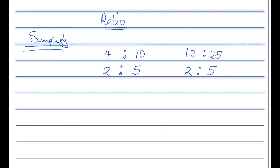Now I want you to do this one: what is 18 ratio 24? 18 and 24 — which times table can we find them both in? They're both in the six times table. So 18 divided by six is what? Three. And 24 divided by six is also — yes, that's right, three.